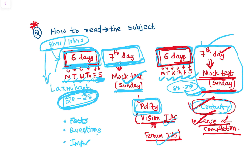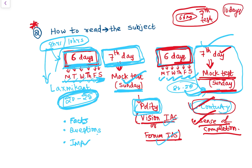For the next six days, read another subject — for example, Spectrum for Modern History or Economics — and on the seventh day give a test on Economics or whatever you have read on the weekdays. If you want, you can read for ten days and give the test on the eleventh day, but I generally recommend giving a test every Sunday on what you have read during the weekdays.